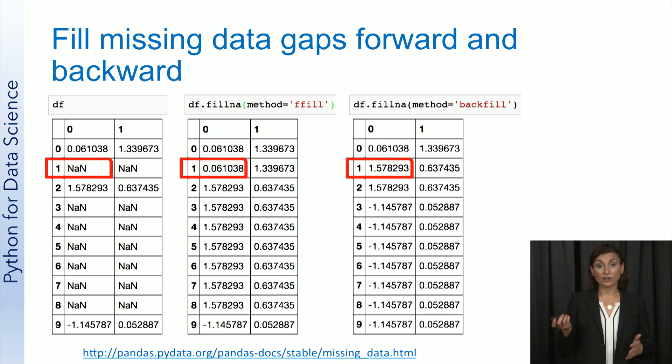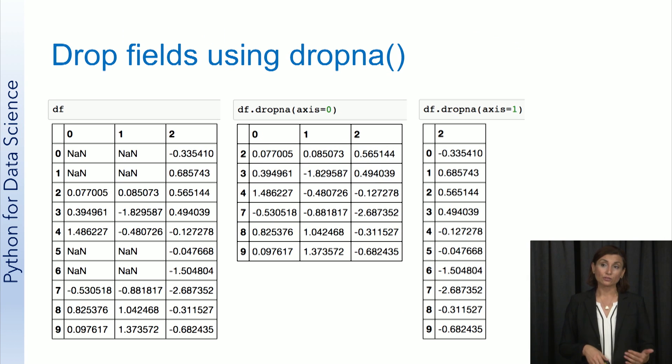Another function that we'll use a lot is called dropNA to drop the fields with missing values. So a dropNA function will drop any row or column with a missing value in the data frame.